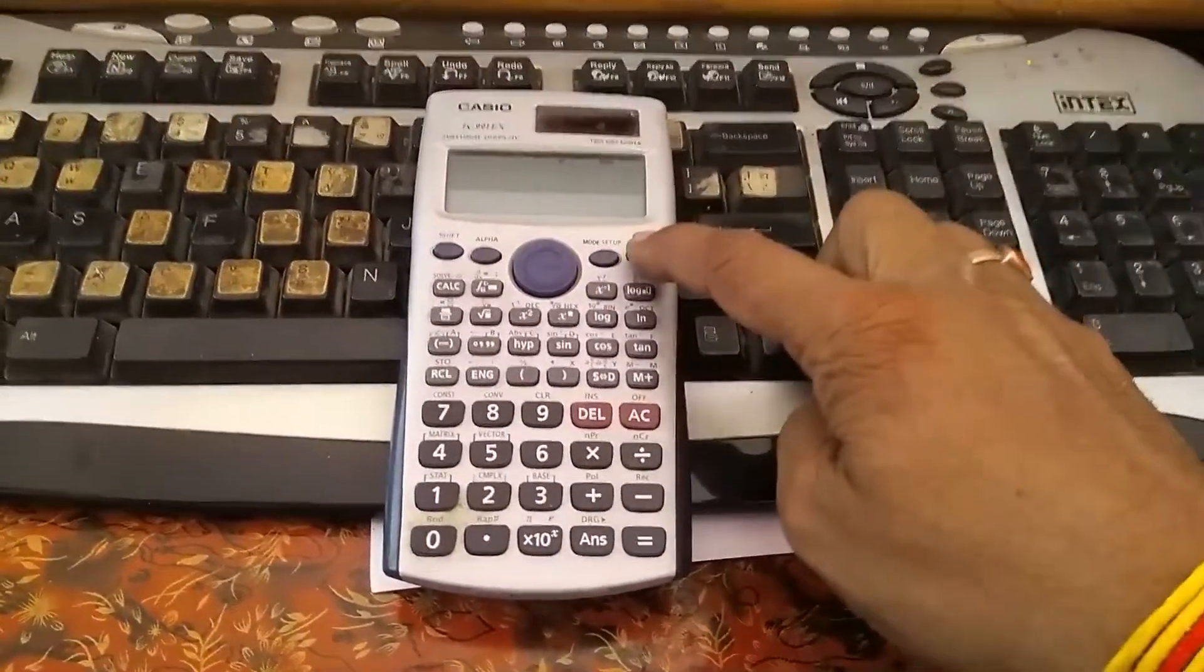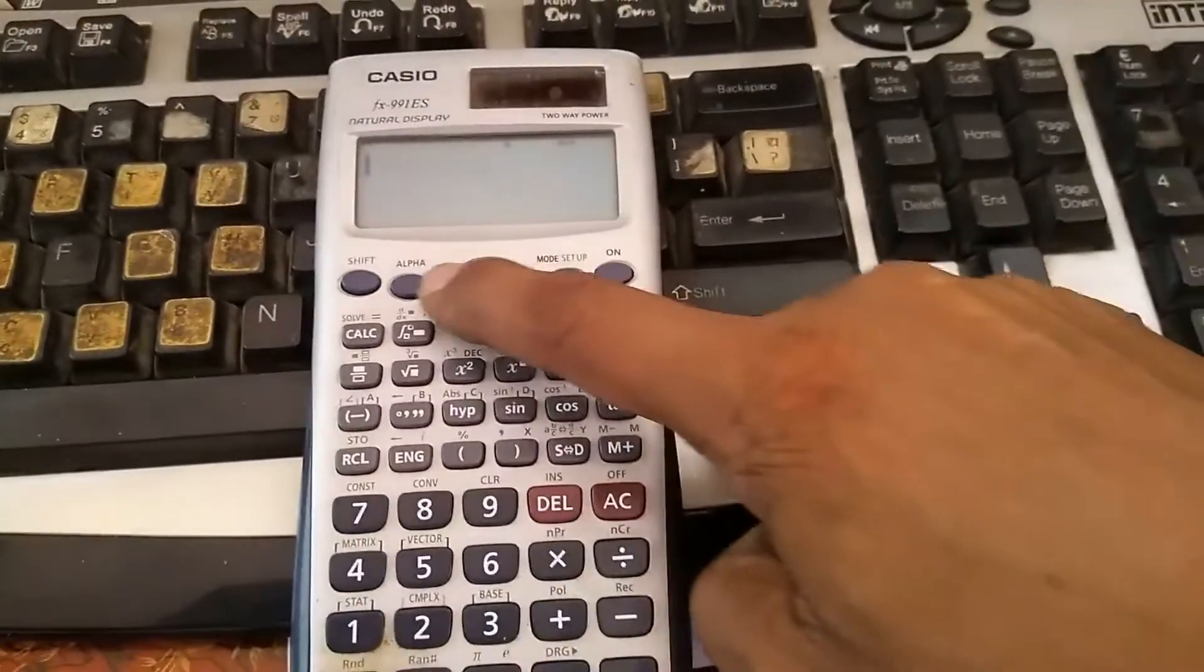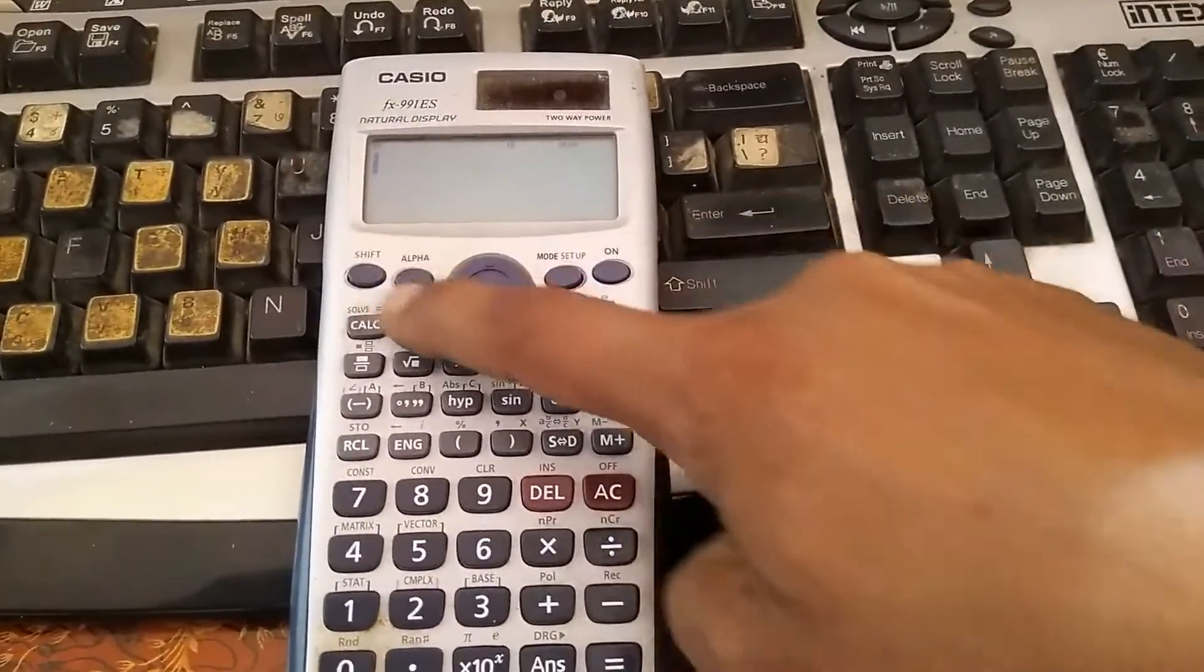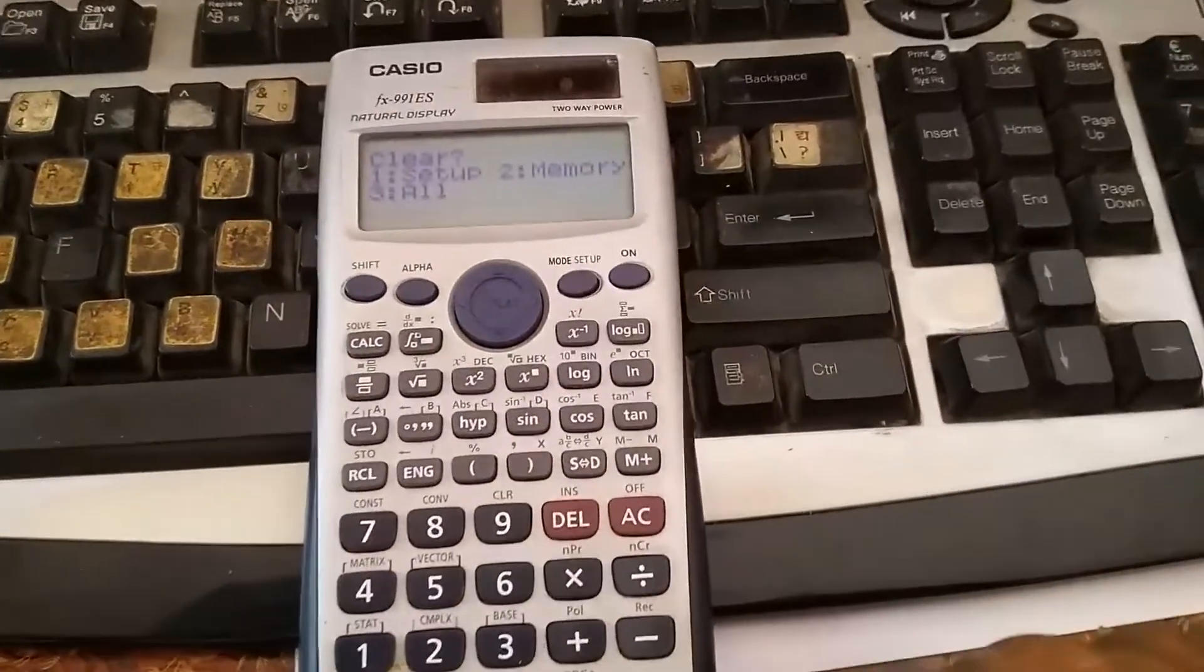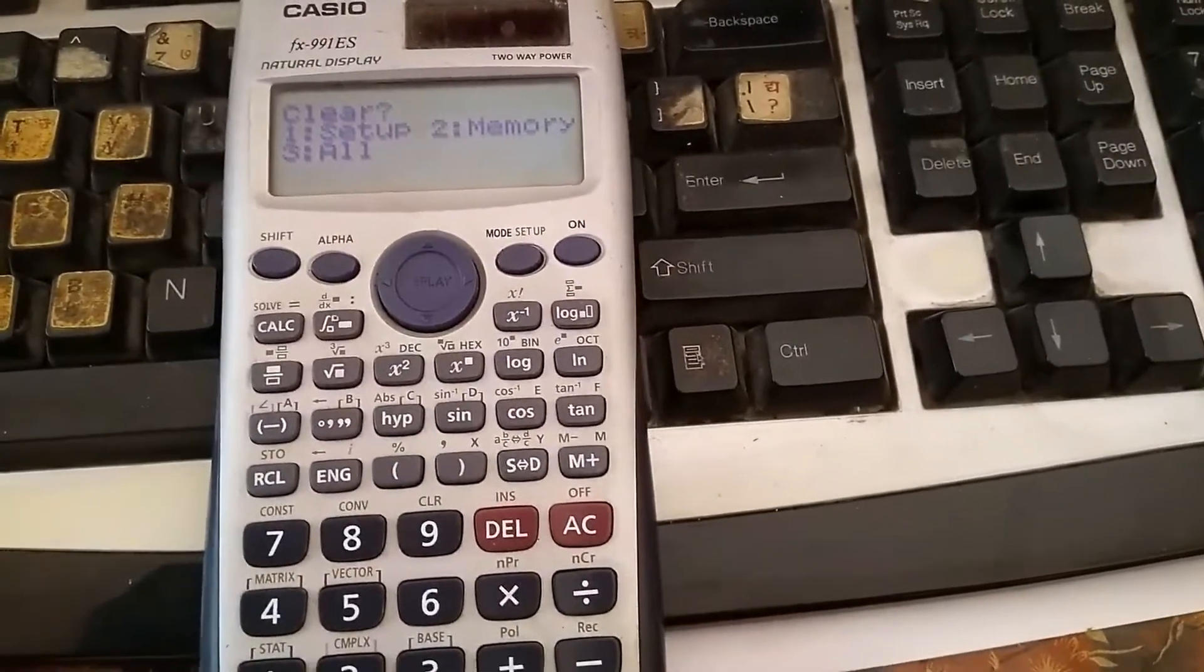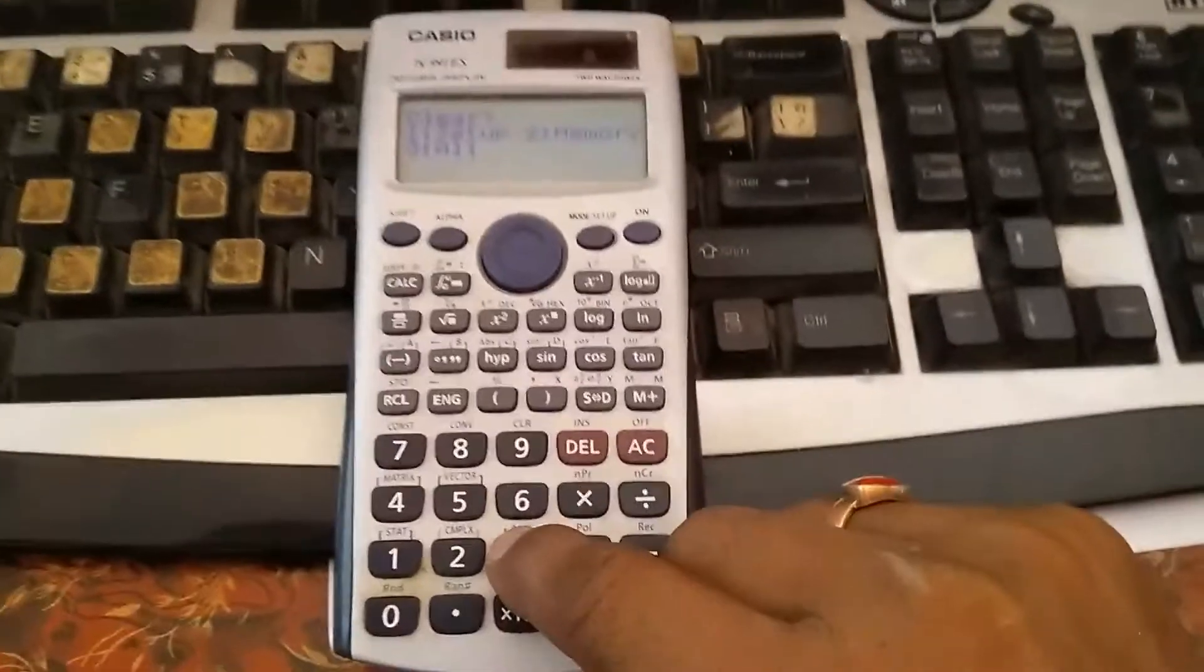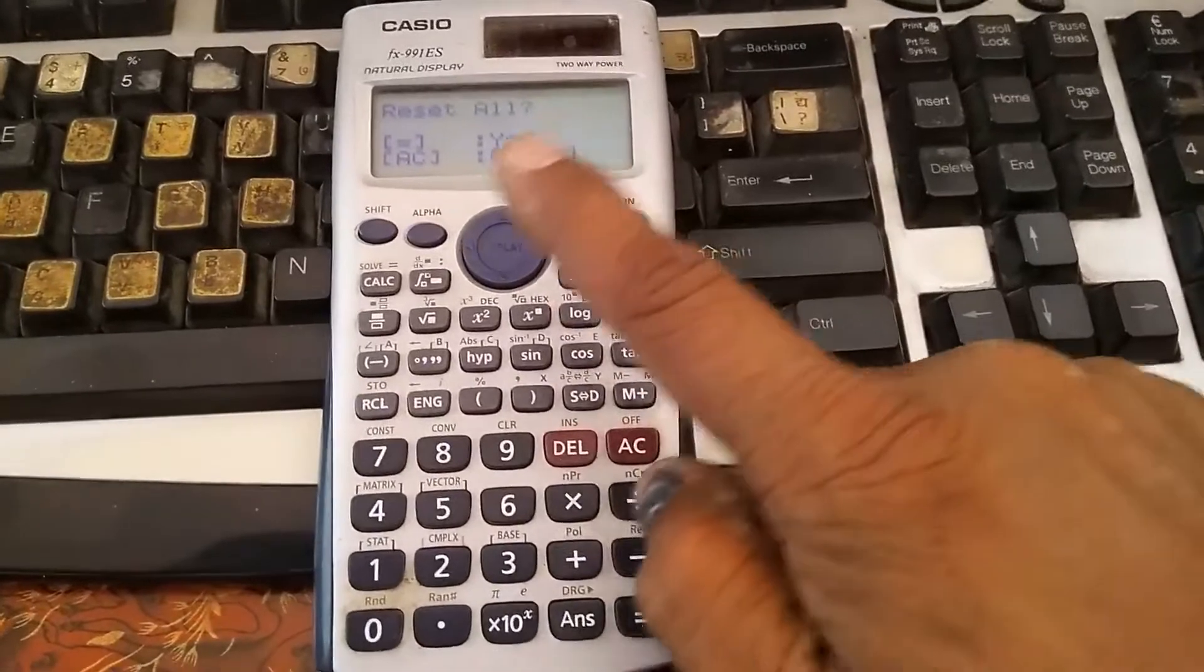First, turn on the calculator and press Shift, then press 9. A message will pop up showing Clear, Setup, Memory, and All. Then press 3 to select Reset All.